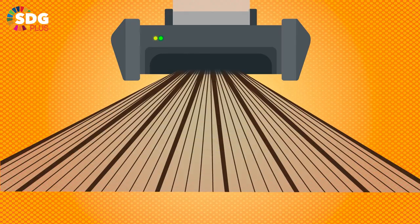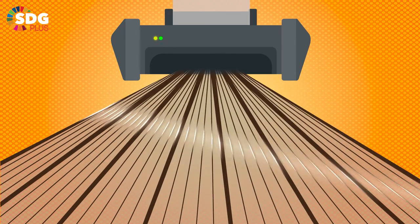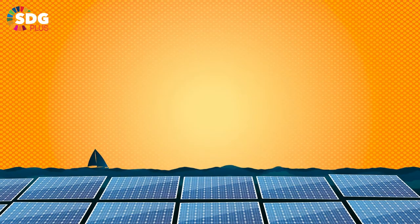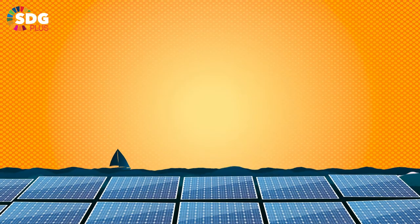Paper-thin, printable solar panels that are cheap and easy to produce. And floating solar farms, giant patches of floating solar panels on the ocean's surface.